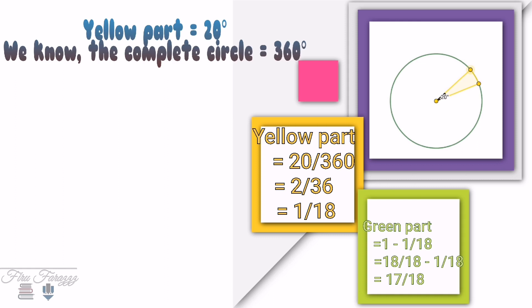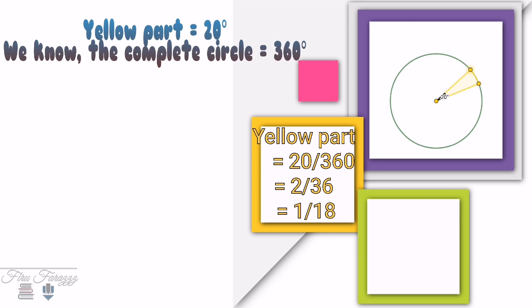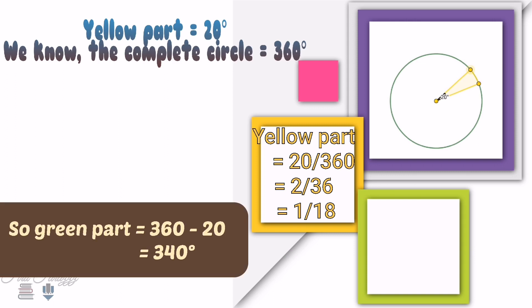We got the fraction of the yellow part. There are two ways to find the green part. The easy way is subtraction — in 18 equal parts, only one part is yellow, so the remaining 17 parts will be green. The second method: the green part is 360 minus 20, which equals 340°.